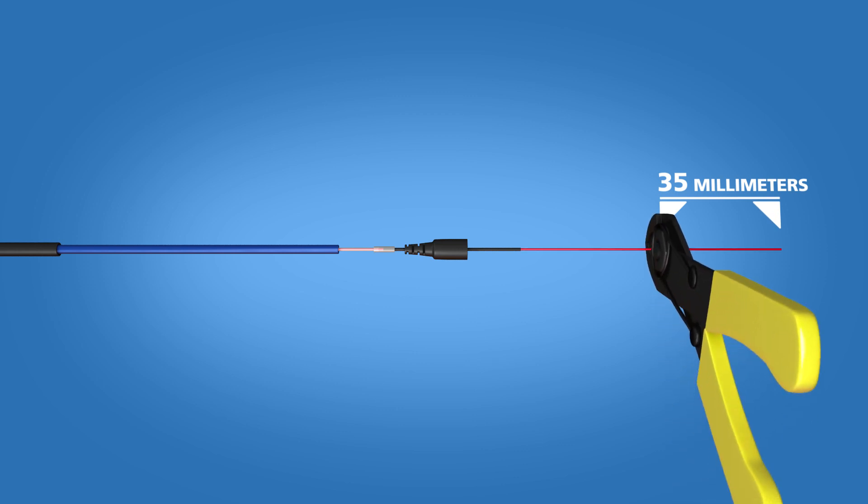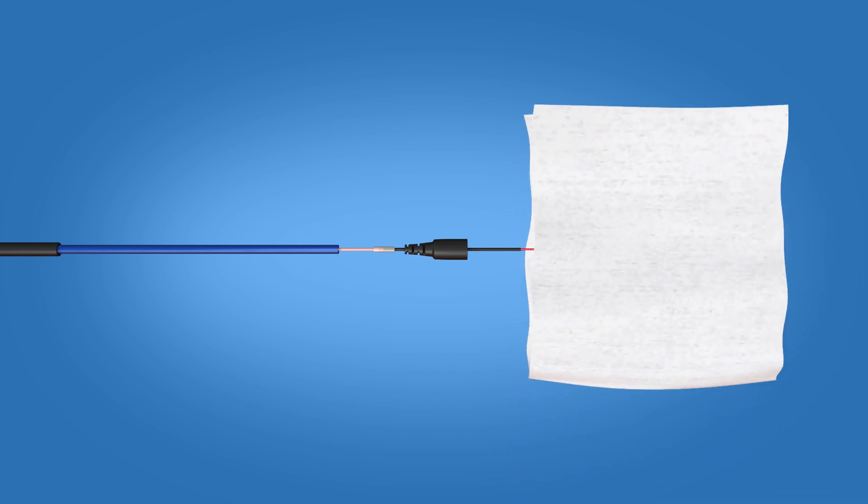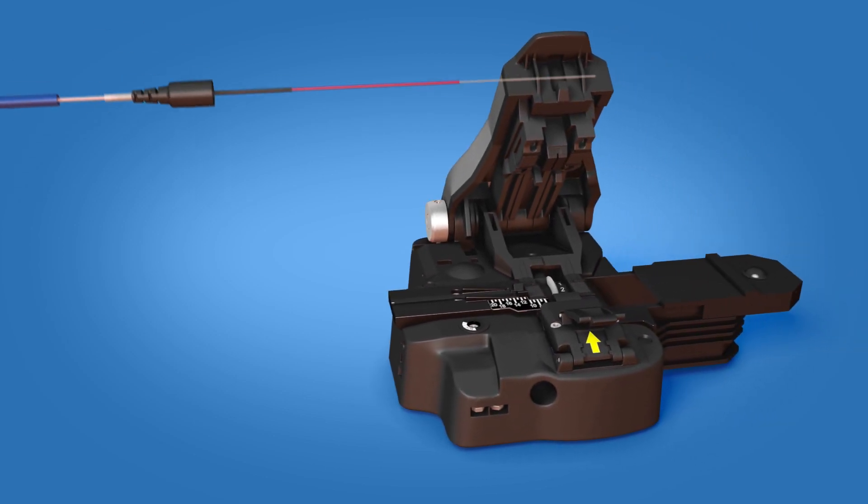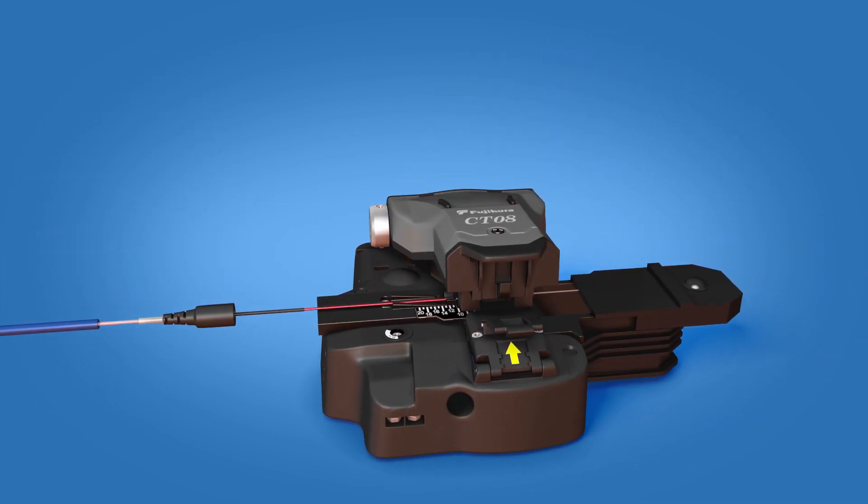Strip 35 millimeters of the colored acrylate off of the 250 micron fiber. Clean the fiber with a lint-free wipe and fiber preparation fluid. Next, place the fiber into the cleaver and cleave to a length of 10.5 millimeters.